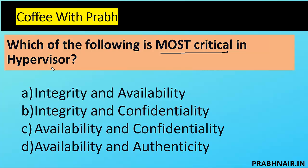Looking at integrity and availability: if the hypervisor is compromised, it could compromise the entire platform, so accuracy and integrity of the configuration is very important. Second, if hypervisor services are unavailable, it can impact the entire architecture. For option B, integrity and confidentiality — the hypervisor itself doesn't store configuration data; it is used to host machines, and machines store the data.